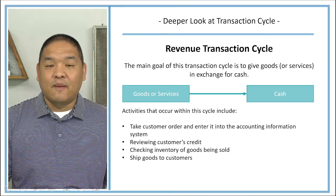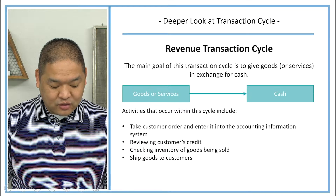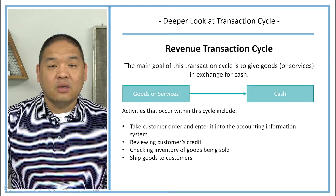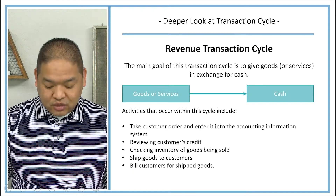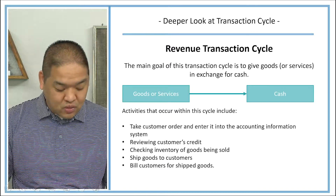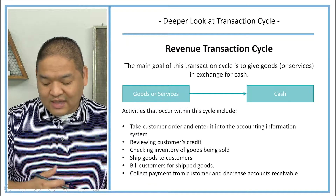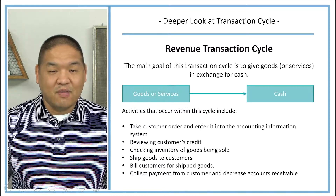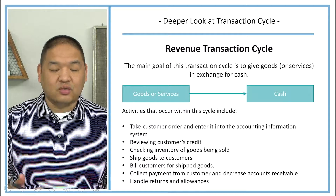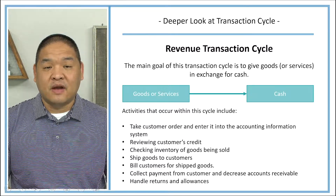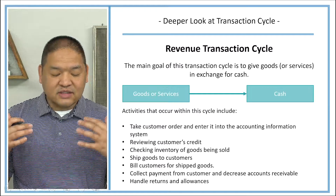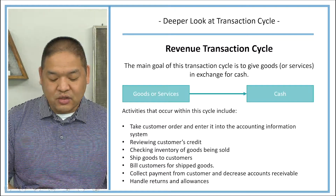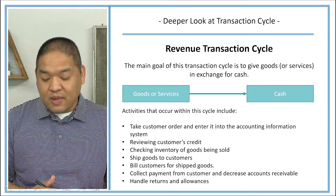We may also need to ship those goods to the customer. If we've sold goods on account, we'll need to bill them for the goods or services rendered. We also need to collect payment and decrease accounts receivable once the obligation is paid. Finally, we may need to handle returns and allowances from the customer. These are the main tasks associated with the revenue transaction cycle.